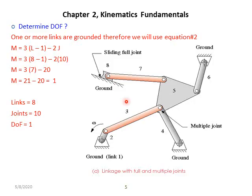It's time to count the degree of freedom of a mechanism. To practice the counting of degree of freedom, let's consider the first example. It's a complex mechanism which has many links and joints, and we have to count how many degrees of freedom this mechanism has. As you can see, there are more than one ground links — we can count ground link one, two, three, and four. Since the ground links are more than one, we have to choose equation number two to determine the degree of freedom.